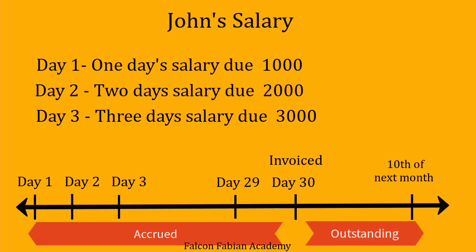A business is supposed to pay both accrued and outstanding expenses. The difference is that an accrued expense is one for which no invoice has been raised and the due date for payment has not come. An outstanding expense is one which the business has to pay and for which the invoice has already been raised.